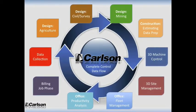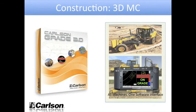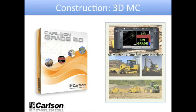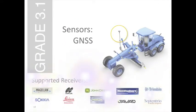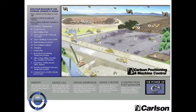Carlson has 3D machine control products, including Carlson Grade. Carlson Grade is designed for all machine types — one software interface, one software. Carlson supports most all GPS and GNSS receivers for machine control, land surveying, and data collection products. Here we see a site with all the different machines working, all automated or guided by Carlson Grade.